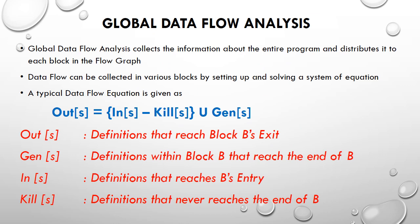The global data flow analysis collects information about the entire program and distributes it to each block in the flow graph. Data flow can be collected in various blocks by setting up and solving a system of equations. A typical data flow equation is: out(S) = (in(S) - kill(S)) ∪ gen(S), where S is the block and out, in, kill, and generate are set values giving you statement numbers. Their dependency gives information about the program, and by finding out the values of out and in repeatedly, we complete the global data flow analysis.